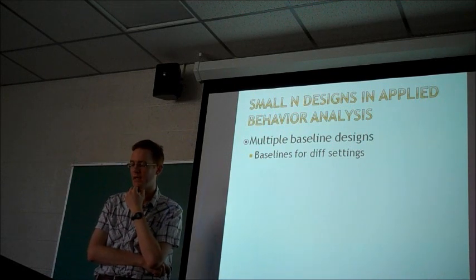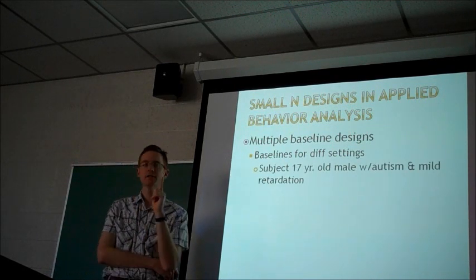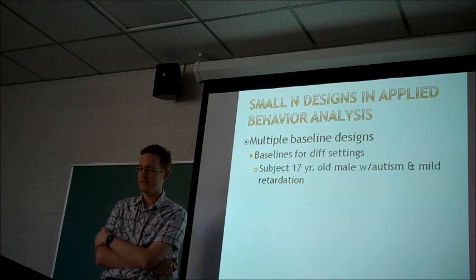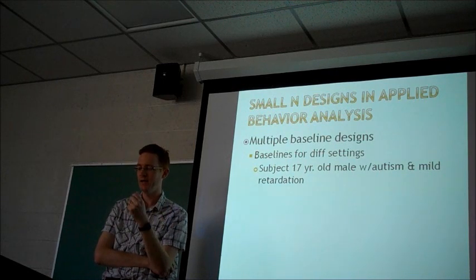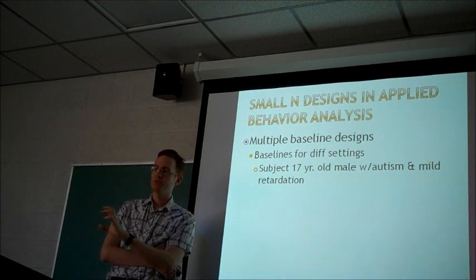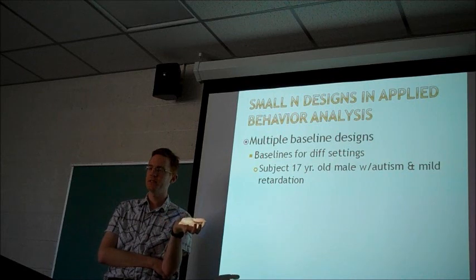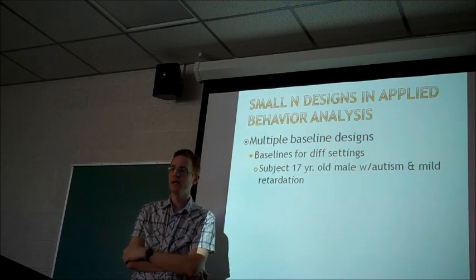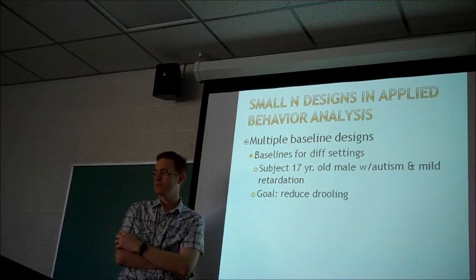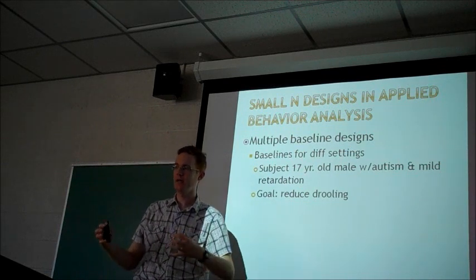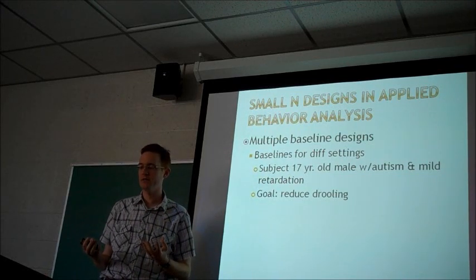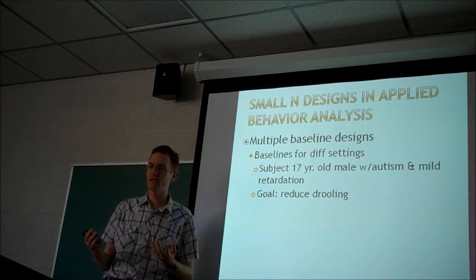The example we'll be looking at involves a single subject: a 17-year-old male who has been diagnosed with autism and mild retardation. The goal of this particular treatment is to reduce a problematic behavior not uncommon with these folks — this person had a problem with drooling. They used an applied behavioral analysis approach and a conditioning-type treatment to see if they could get this person to control that behavior.